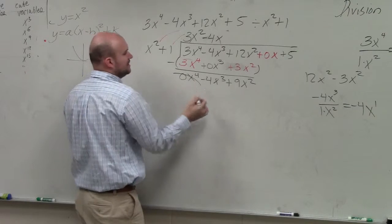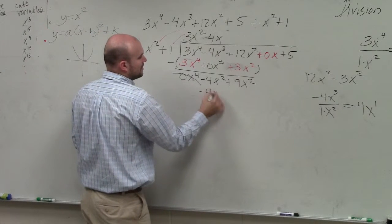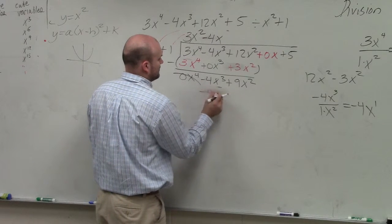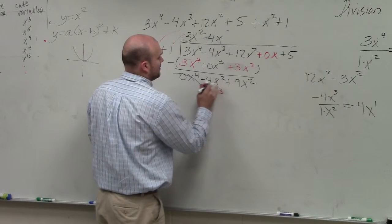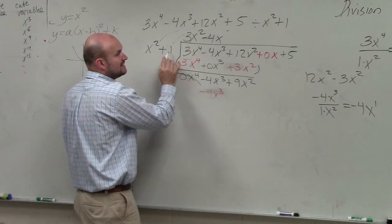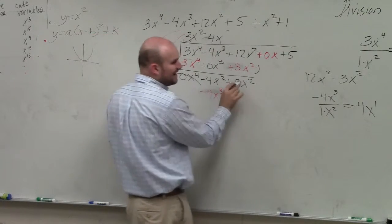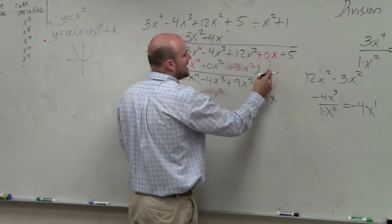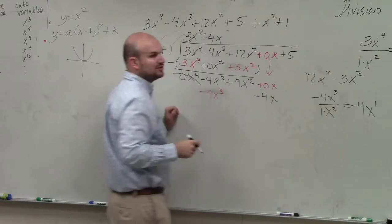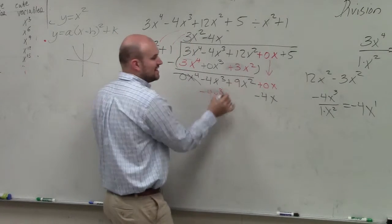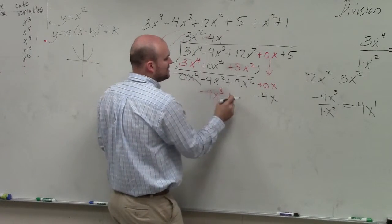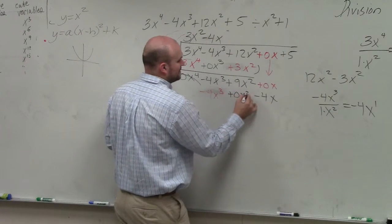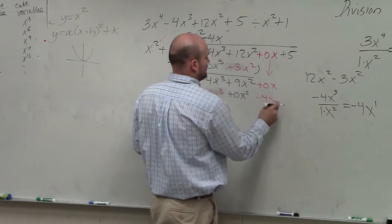Now we multiply that down. Negative 4x times x squared is going to be a negative 4x cubed. Actually, let me write it in red. Negative 4x times 1 is negative 4x. I can't subtract that from x squared, so I'm going to put that over here. So therefore, I'll bring down this 0x now to help me with my subtraction. I don't have an x squared, so I'll use another place value.